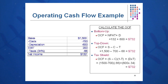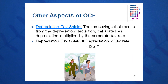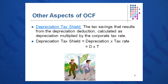Use all the alternate methods of calculating OCF and you should still get the same answer. The important fact here in one of these methods is the depreciation tax shield. Depreciation is a non-cash expense and a tax shield. The DTS savings result from the depreciation deduction, which is just D times T, so you can quickly calculate the impact that depreciation has on your company by taking D times T.